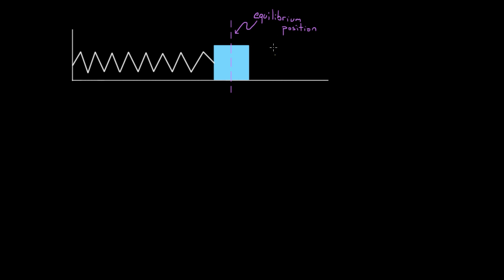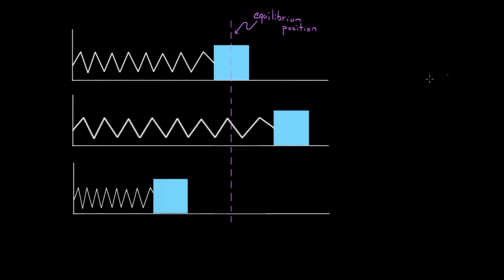The first term you gotta know is that if you displace a mass from equilibrium — that's how you get the thing to oscillate, by displacing it from equilibrium — the maximum magnitude of displacement, so this amount right here, whatever that distance is, is called the amplitude.